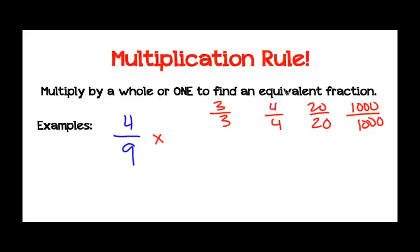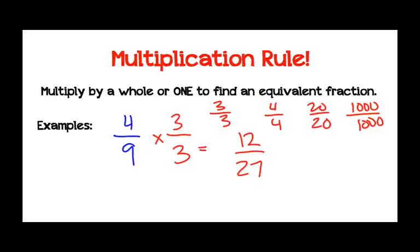So let's just use 3 over 3. Let's multiply the numerators: 4 times 3 would be 12. And 9 times 3 would be 27. So an equivalent fraction to 4-ninths would be 12/27.